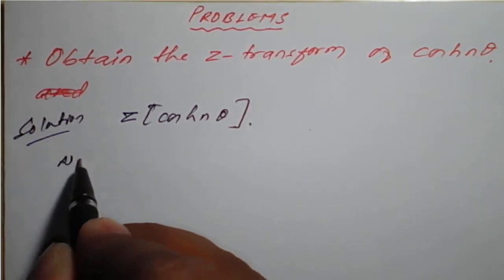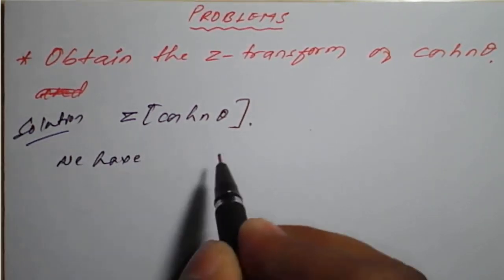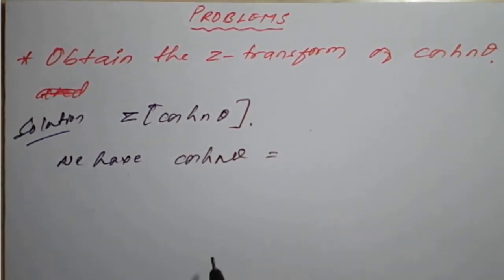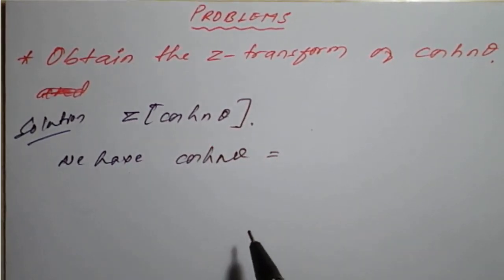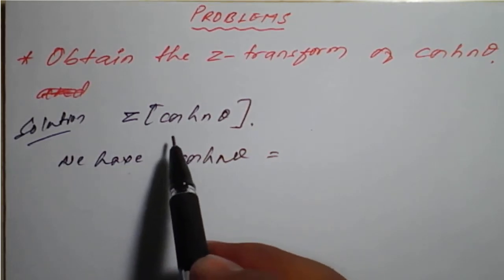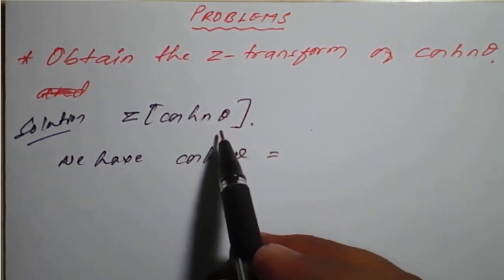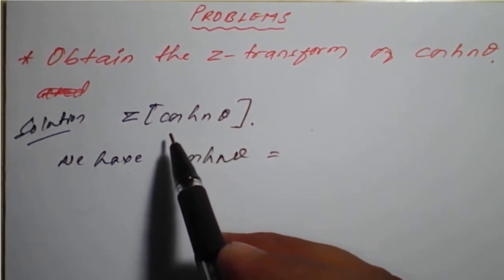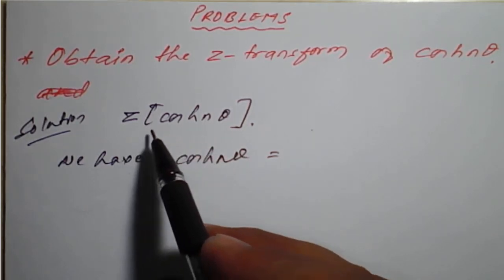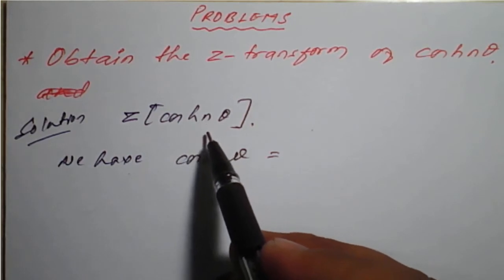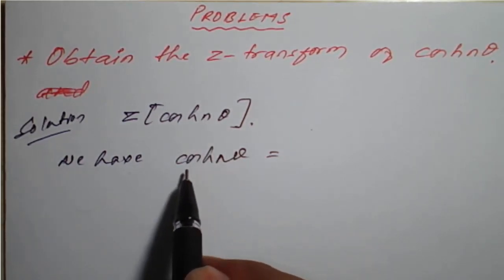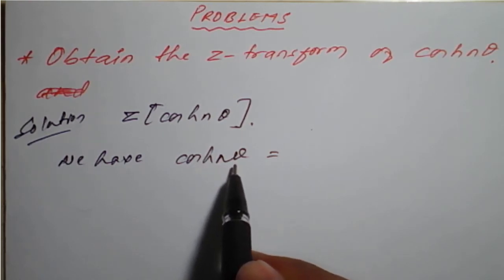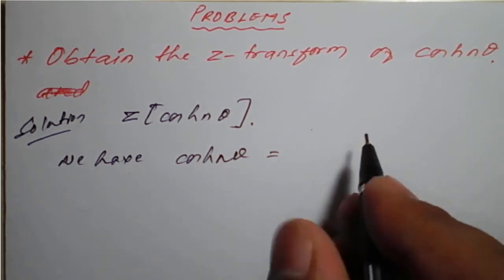Before finding the Z-transform, we need to express cos hyperbolic of nθ in exponential form. We know the Z-transform result for cos(nθ), but here we are going to find the Z-transform of cosh(nθ), so we will handle that case differently.